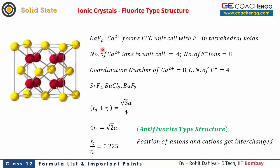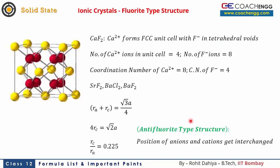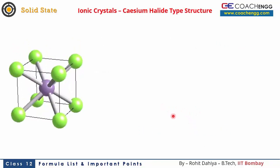The anti-fluorite type structure is exactly the opposite of fluorite. In fluorite, for one cation there were two anions. If for one anion there are two cations, that type of structure is called anti-fluorite. The discussion is completely reversed — the anion forms the FCC structure and cations occupy all the tetrahedral voids.